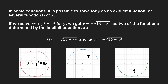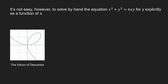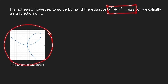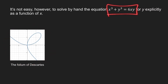However, if we're given an equation, it is not always possible to solve y in terms of x. For the second equation, x cubed plus y cubed equal to 6xy, it is hard to solve y in terms of x by hand, and if you do, you obtain a very complicated expression. The graph of this equation is known as the folium of Descartes. From this curve we can obtain graphs of three functions that satisfy this equation.